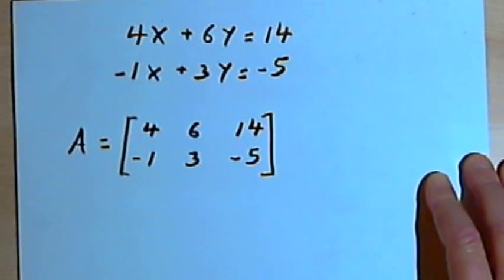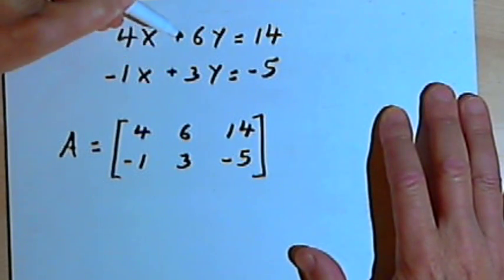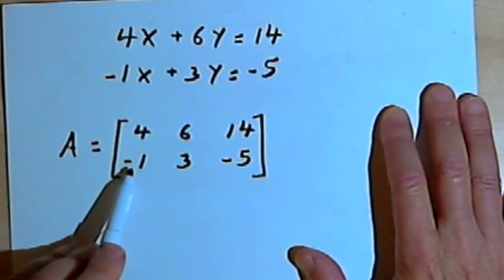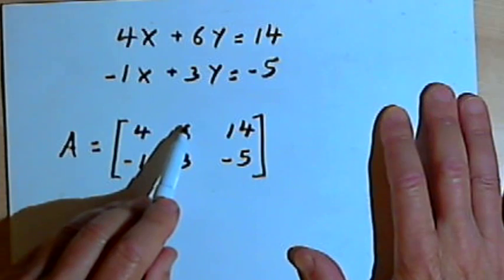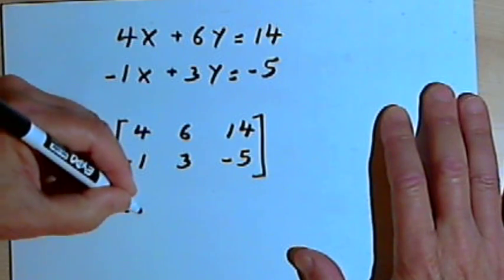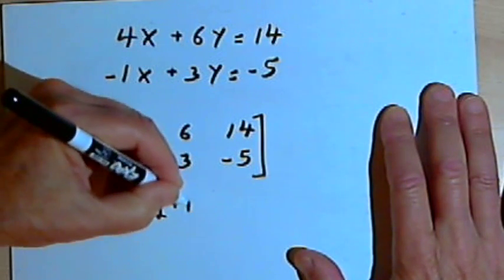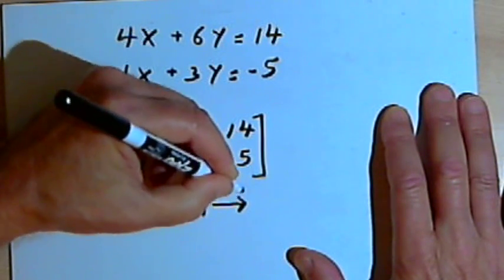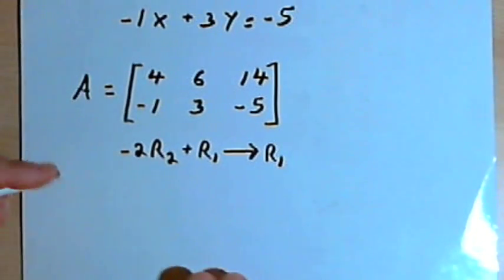Going back to the system of equations, you know that you could multiply a row by some number and then add it to another row. We can do that with the matrix also. So let's say we want to multiply the second row by negative 2 and then add it to row 1, making that the new row 1. We'll write this as: negative 2 times r sub 2 plus r sub 1, with an arrow showing that becomes the new row 1.